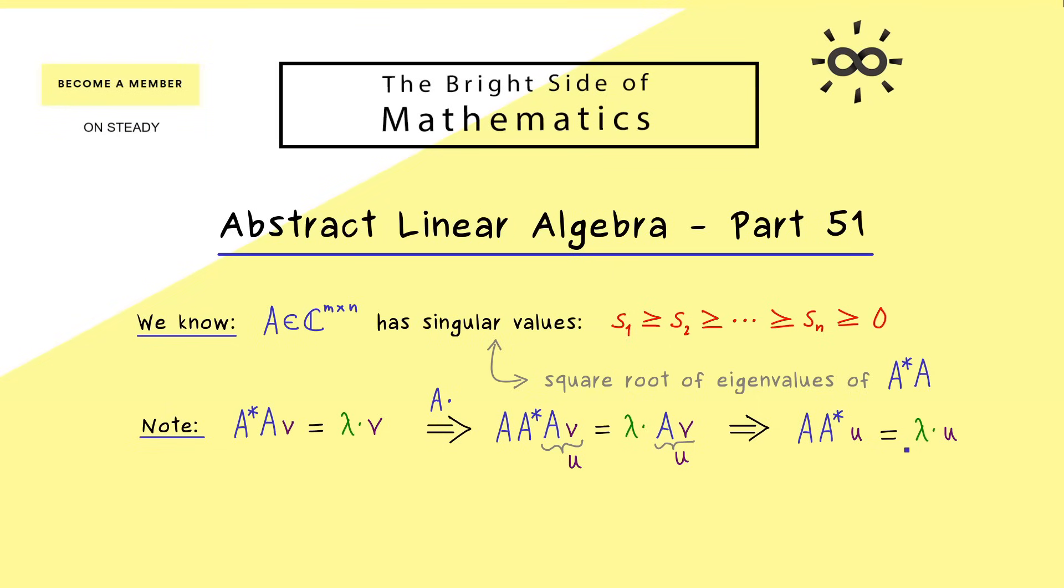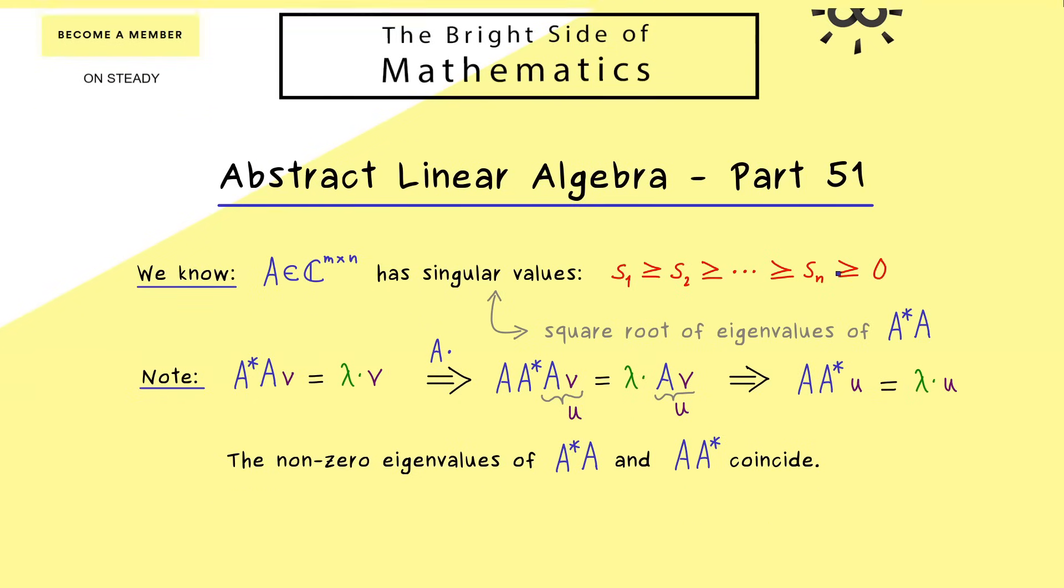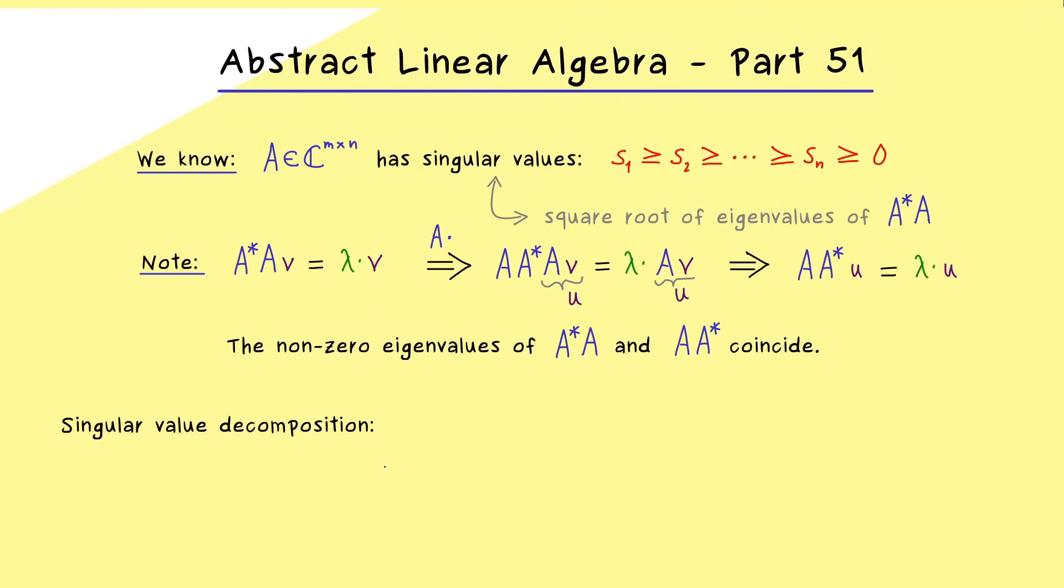Hence we get the eigenvalue equation for A A star. Please note that the corresponding eigenvalue stayed exactly the same as the one for A star A. Since we can do the same steps the other way around, we actually get that the non-zero eigenvalues of A star A and A A star coincide. So the conclusion is that for the definition of the singular values, it simply does not matter which order you choose here in the matrix product.